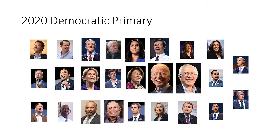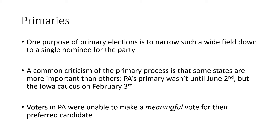One of the purposes of primary elections is to narrow such a wide field down to a single nominee. One criticism is that some states don't get to vote until later in the process. For example, here in Pennsylvania our primary was not until June 2nd, but the Iowa caucus was the first primary on February 3rd. By the time June rolls around and Pennsylvania voters get to vote, the candidate they might have wanted to vote for was no longer even in the race, leaving them unable to make a meaningful vote for their preferred candidate.